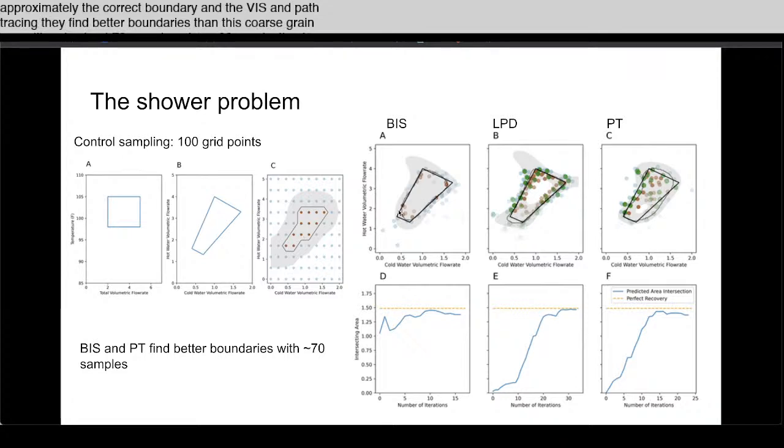To find a pretty reasonable looking boundary. You can see most of the points end up around where the boundary is, so you can do better than this coarse grid with almost anything in here.